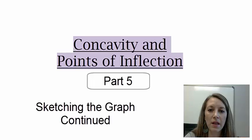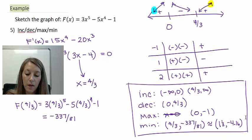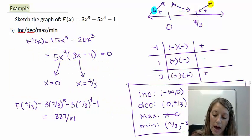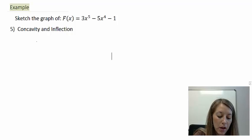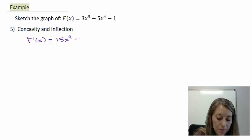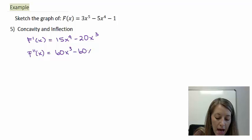Okay, continuing right where I left off, we are going to finish the sketch of the example that I gave in the last video. Now to our new information: concavity and inflection points. We do that from the second derivative. So remember, the first derivative was 15x to the fourth minus 20x to the third, so our second derivative then is 60x to the third minus 60x squared.